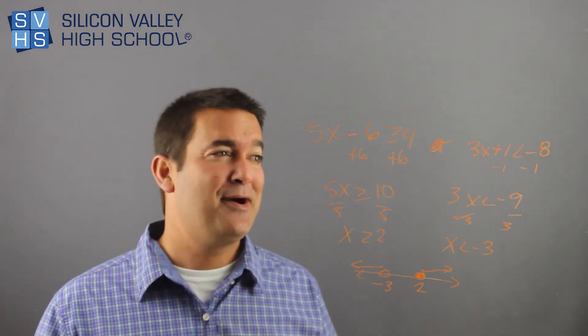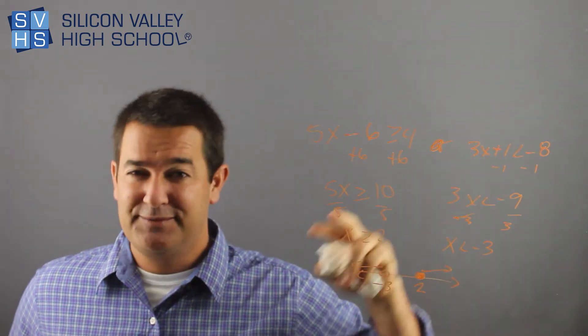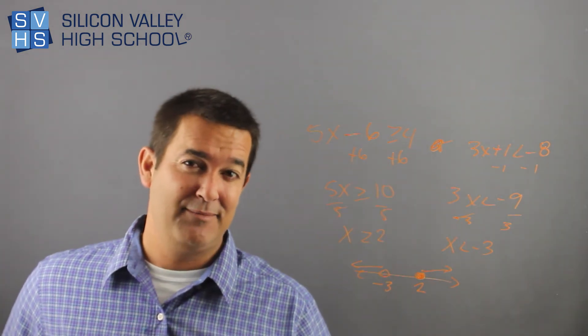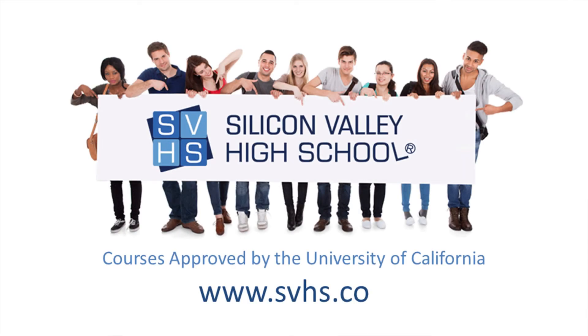So anyways, that's how you do these compound inequalities. I think they're okay, I think they're doable. Again, you can solve them separately or you solve them at the same time, but either way, the answer comes out the same. And beware of the and versus the or, and that's it. And if you're having a hard time at your local high school passing this class, take it online at Silicon Valley High School and pass it there, and the credits will be transferred back to your school.